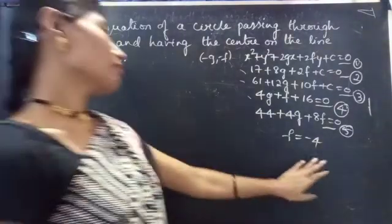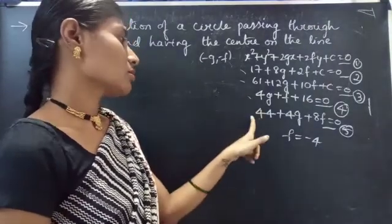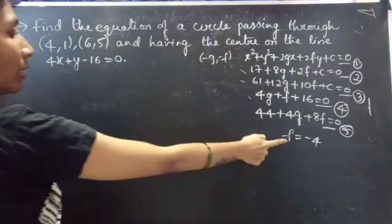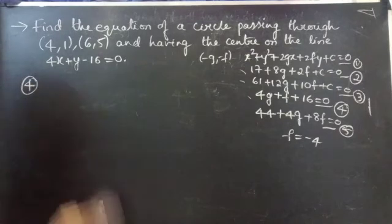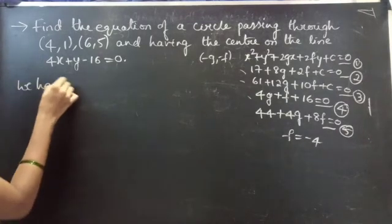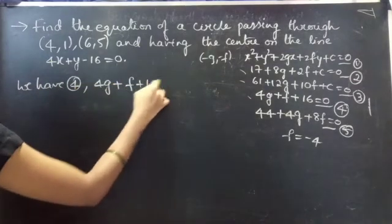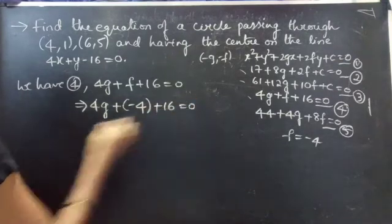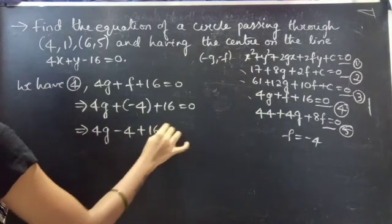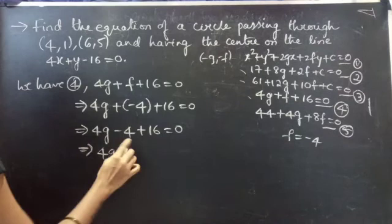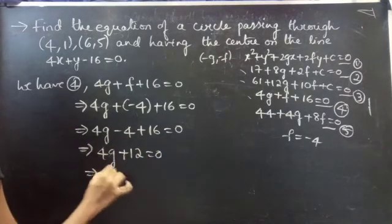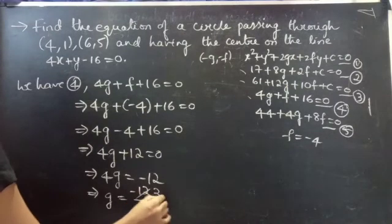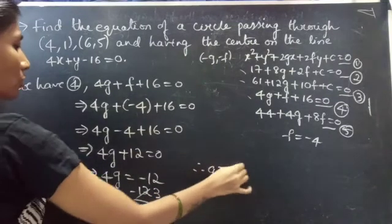Now substitute the value of f into equation 4 to get the value of g. Equation 4: 4g + f + 16 = 0. Substituting f = −4: 4g − 4 + 16 = 0, so 4g + 12 = 0, giving 4g = −12, therefore g = −3.